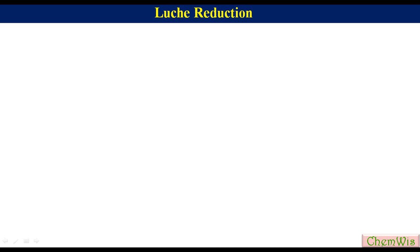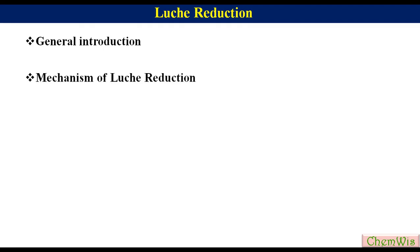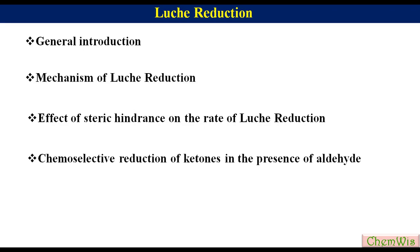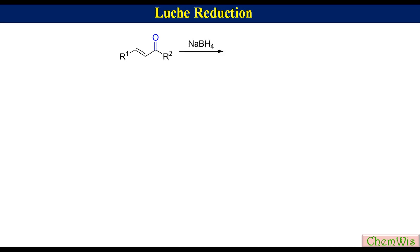Hello friends, the topic of today's discussion is Luche reduction. In this we will discuss the following points: general introduction, mechanism of Luche reduction, effect of steric hindrance on the rate of Luche reduction, chemoselective reduction of ketone in the presence of aldehyde using Luche reduction conditions, and finally some problems based on Luche reduction. Reduction of alpha-beta unsaturated ketone with NaBH4 in the presence of cerium chloride as a Lewis acid catalyst in alcohol like methanol or ethanol.